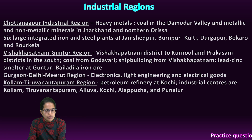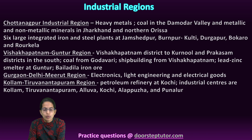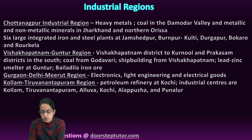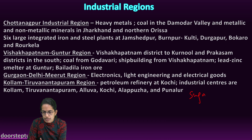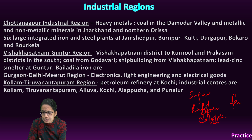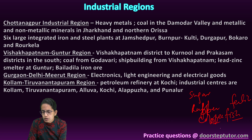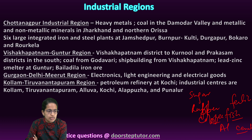In the south, the Kollam-Thiruvananthapuram region developed, with a petroleum refinery established at Kochi. Industrial sectors at Kollam, Thiruvananthapuram, Kochi, Alappuzha, and Punalur were established. Major industries here include sugar, rubber, coffee, fertilizers, fish-based industries, aluminum, and cement industries.